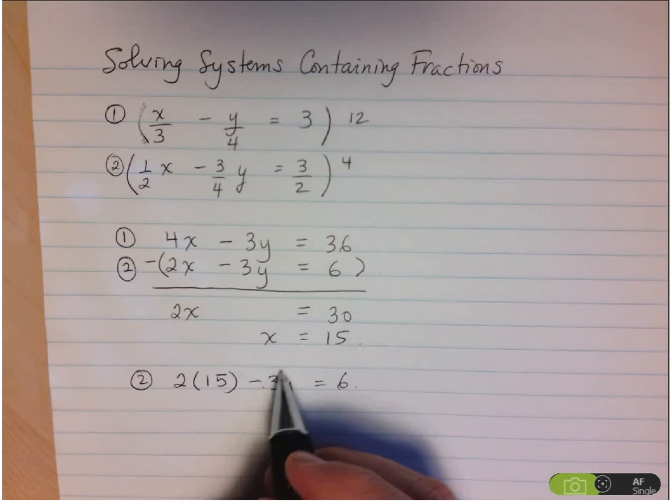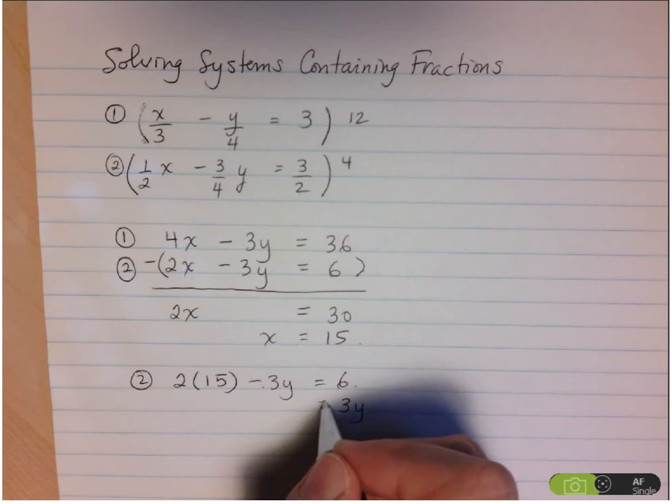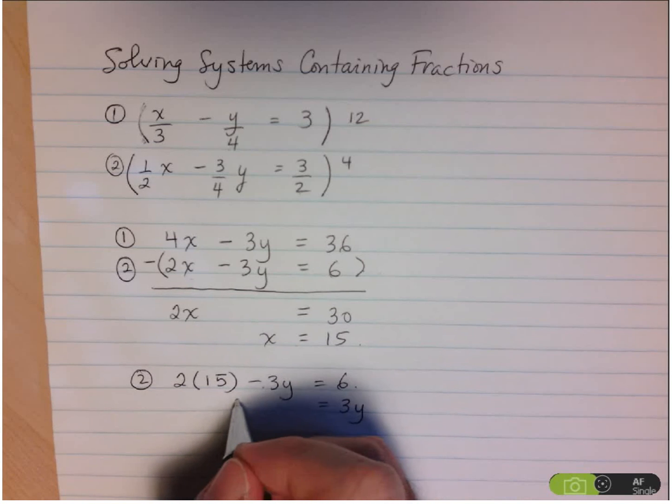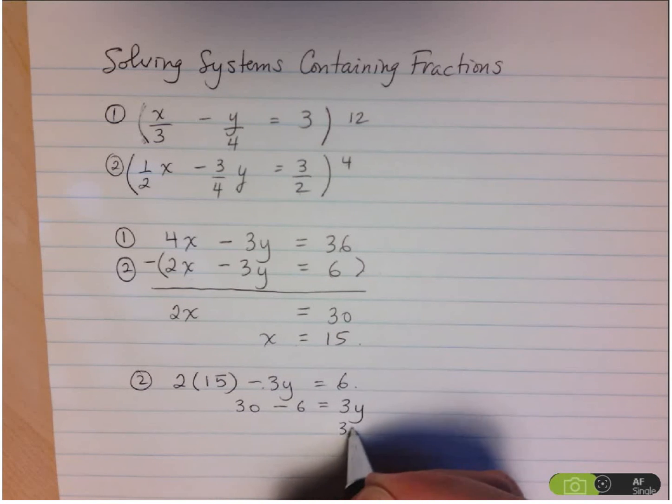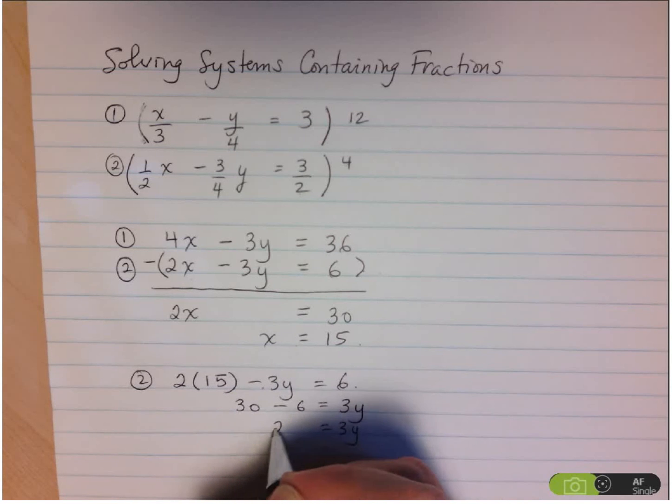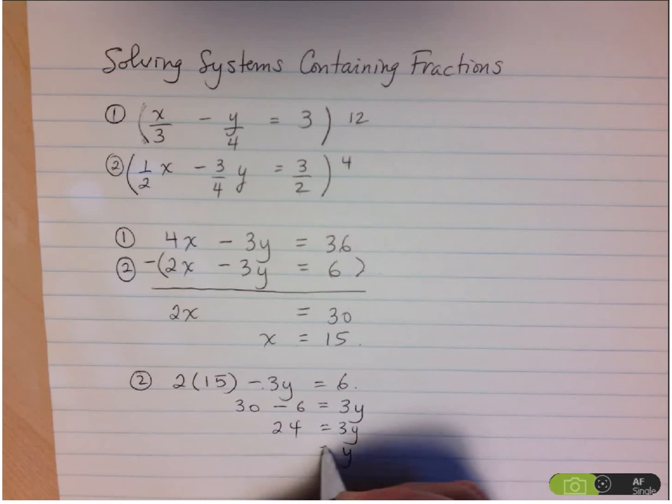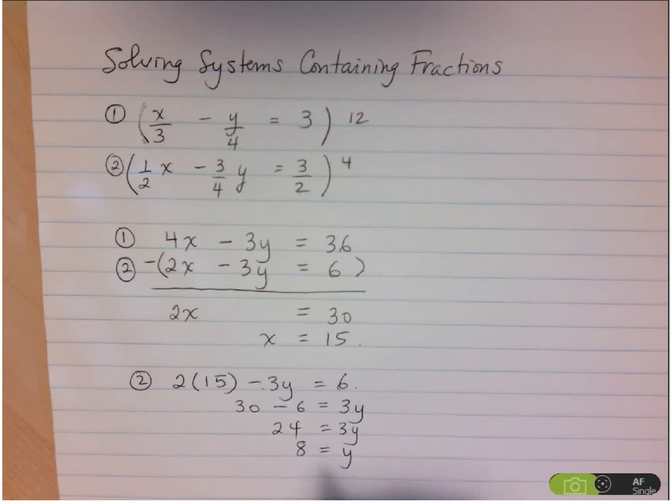So I'm going to, it's negative 3y, let's bring it to the right to make it positive. And here I have 2 times 15 is 30, and then plus 6 becomes minus 6. So 3y equals 24, and y is 24 over 3, which is 8.